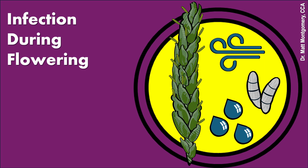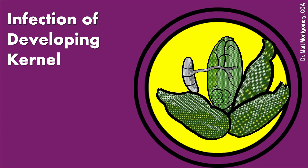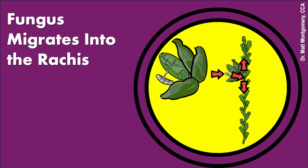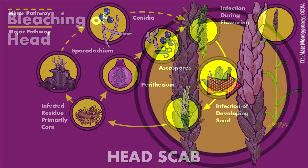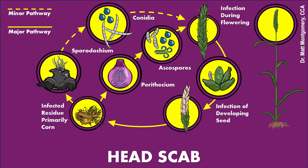If we have moisture right at the period of time that the plant is flowering — you can tell it's flowering by those little yellow anthers poking out of the head itself — those little spores will land and send out little infection pegs. Those infection pegs will find their way into the developing kernel and begin to consume it. They will also work their way through the kernel into the wheat head, going up and down, infecting other kernels, other florets, other portions of the spikelet. That's the critical period of time associated with this disease — when it infects the plant and causes yield loss. Then it produces more fungal material that goes into overwintering residue, and we begin the cycle again.